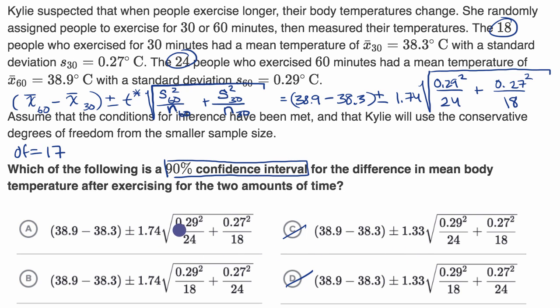And let's see, we have 0.29 squared divided by 24, plus 0.27 squared divided by 18. This one is looking good. Over here, let's see, they mixed up our, they put the 30-minute sample size with the sample standard deviation of the 60-minute group, so that won't work, and so we like choice A.